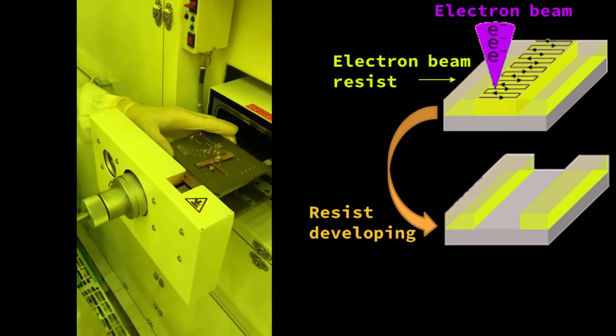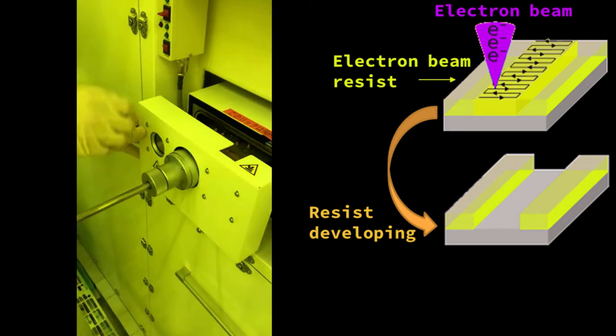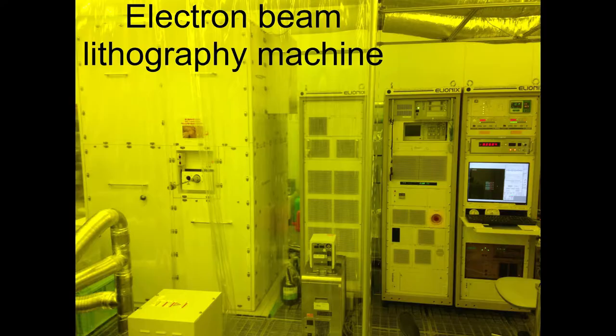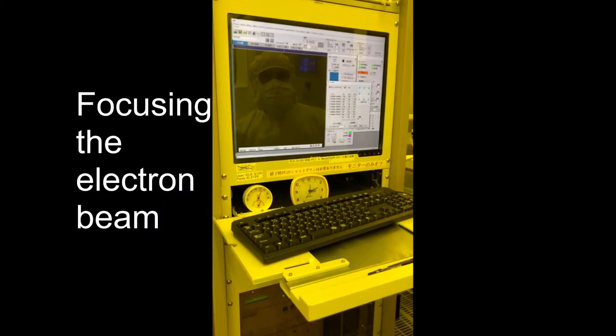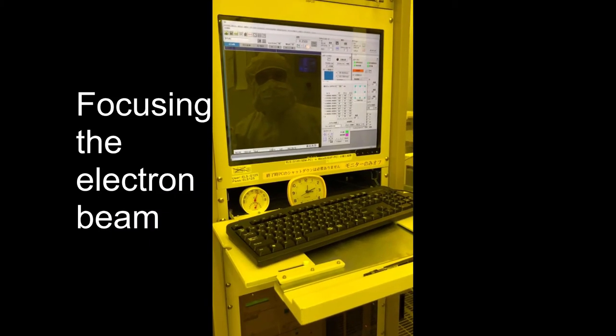This is performed under high vacuum inside the electron beam lithography machine. The beam must be carefully focused before the exposure.